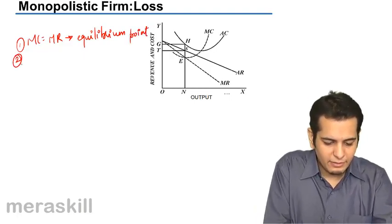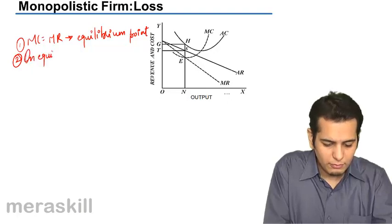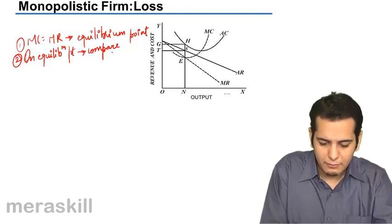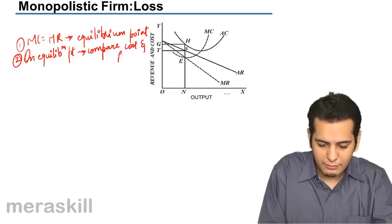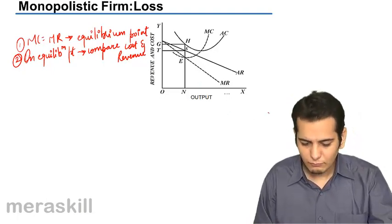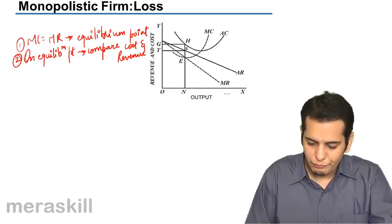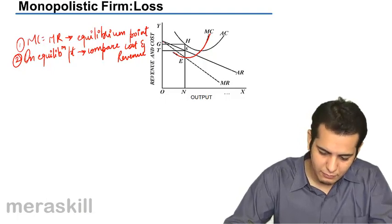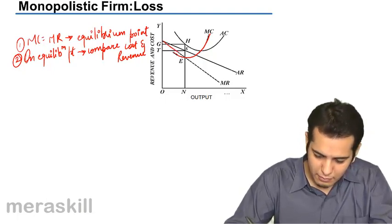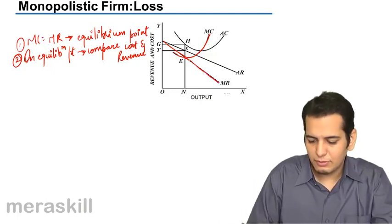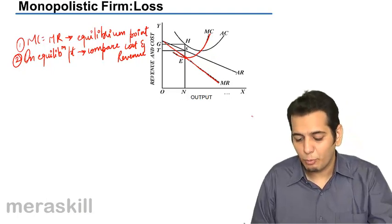Second, on equilibrium point, compare cost and revenue. So, we have the MC curve here. We have the MR curve. We can see that MC curve is intersecting the MR curve at point E.